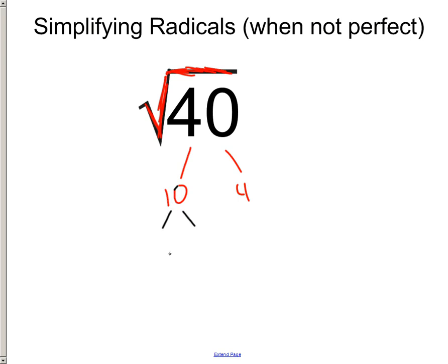Now ask yourself: are these prime numbers, or can we break them down further? What two numbers can I multiply to get 10? How about 2 and 5? And what about this 4? It would be 2 times 2. This is kind of like finding the greatest common factor — that skill is coming back into play. Now we're going to look at these prime numbers, and I've circled them so I know they're as small as we can go.